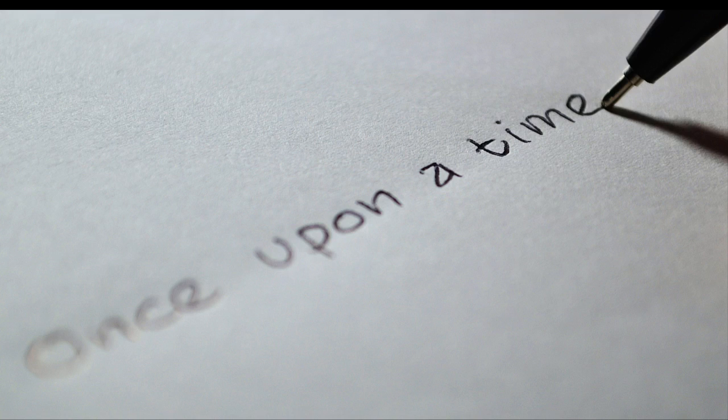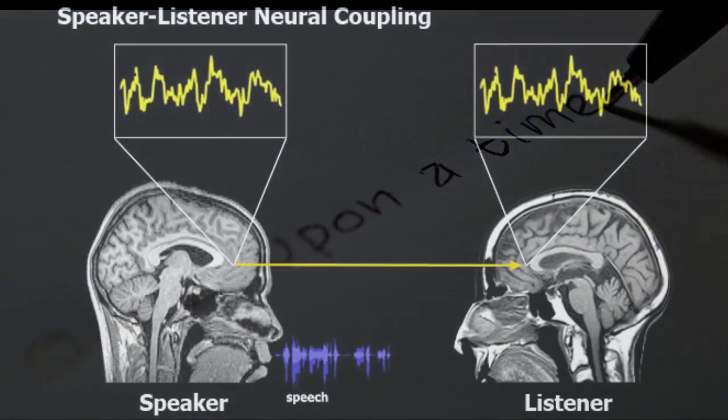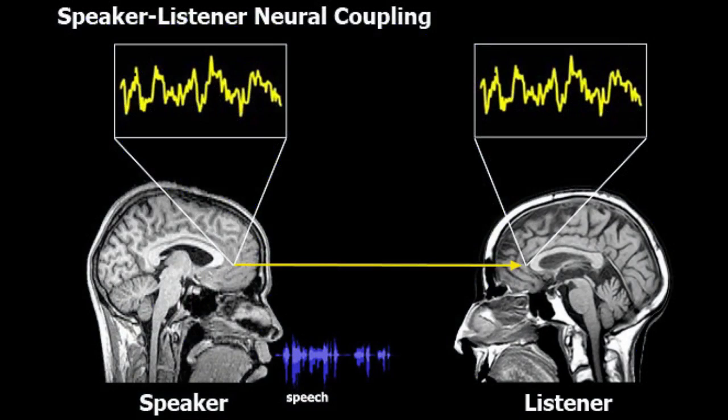Neuroscientists have measured brain activity as it relates to speaker and listener. They've discovered that our brains create an emotional connection – it's called neurocoupling – where the listener's brain activity actually mirrors that of the storyteller. The stronger the coupling between the speaker and the listener, the better the understanding.